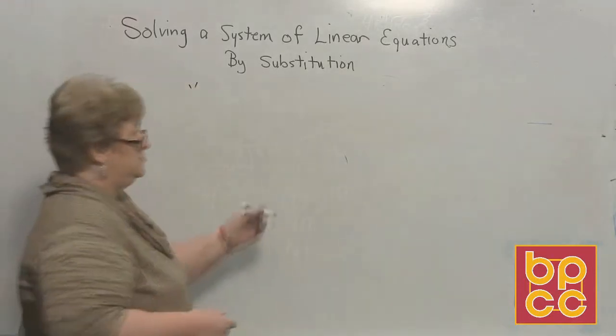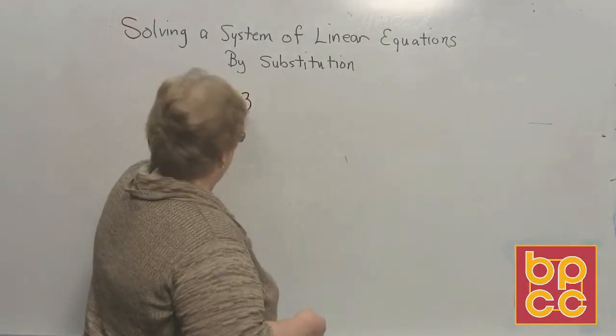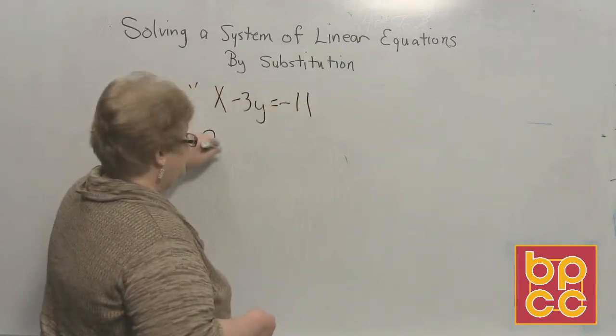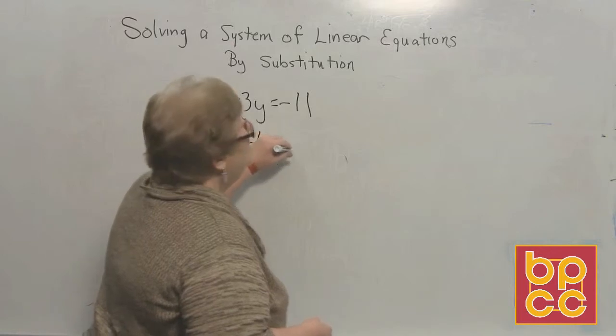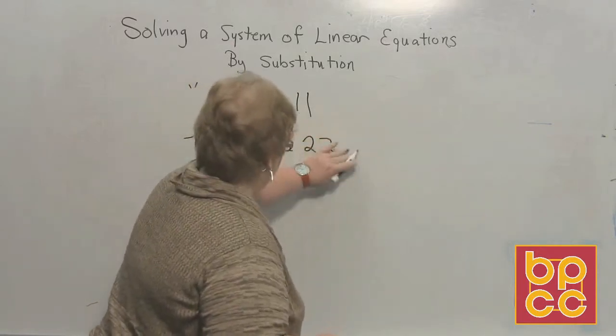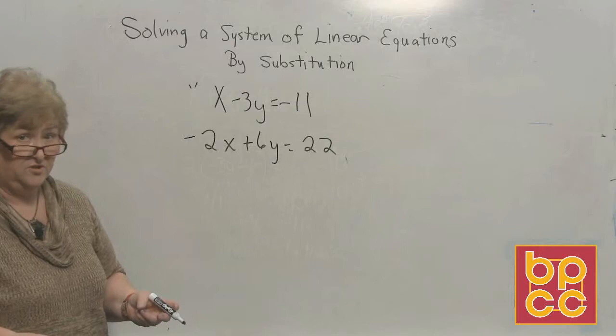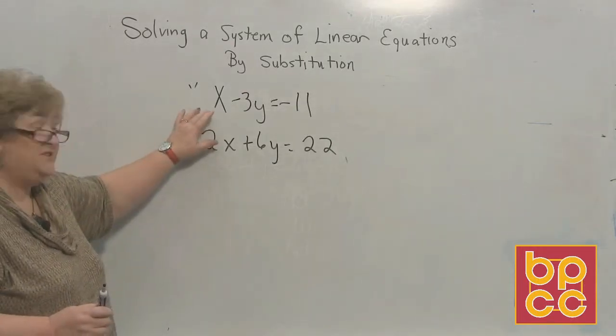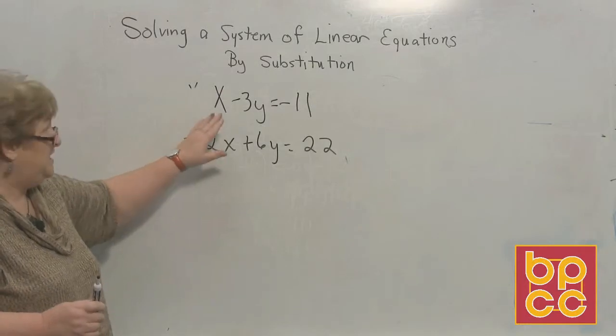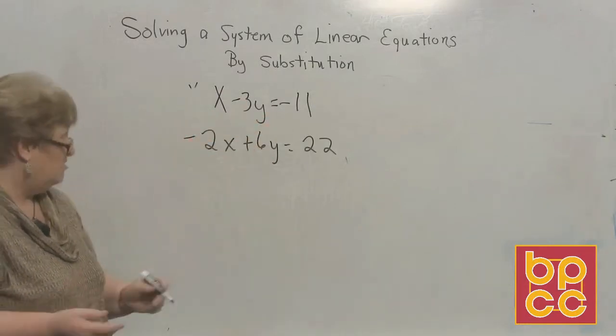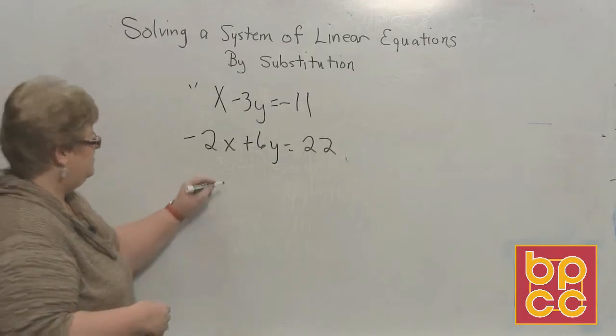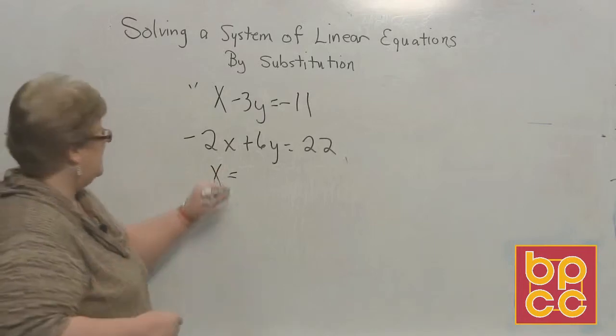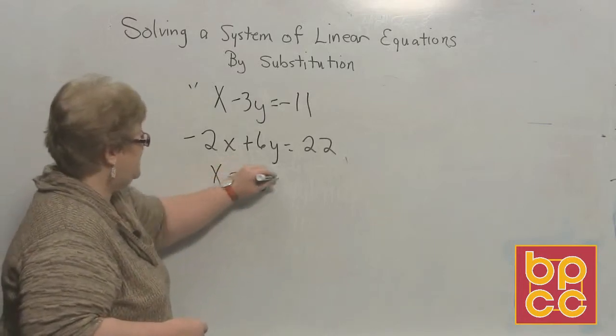Let's see what will happen with this one. I'd like to do x minus 3y equal negative 11. And I'd like a negative 2x plus 6y equal 22. Now, you see that it's not ready for us. There is no x or y single by himself. But I could let this x be by himself if I tell the negative 3y to move to the other side. So I'm going to say x equal a positive 3y minus 11.